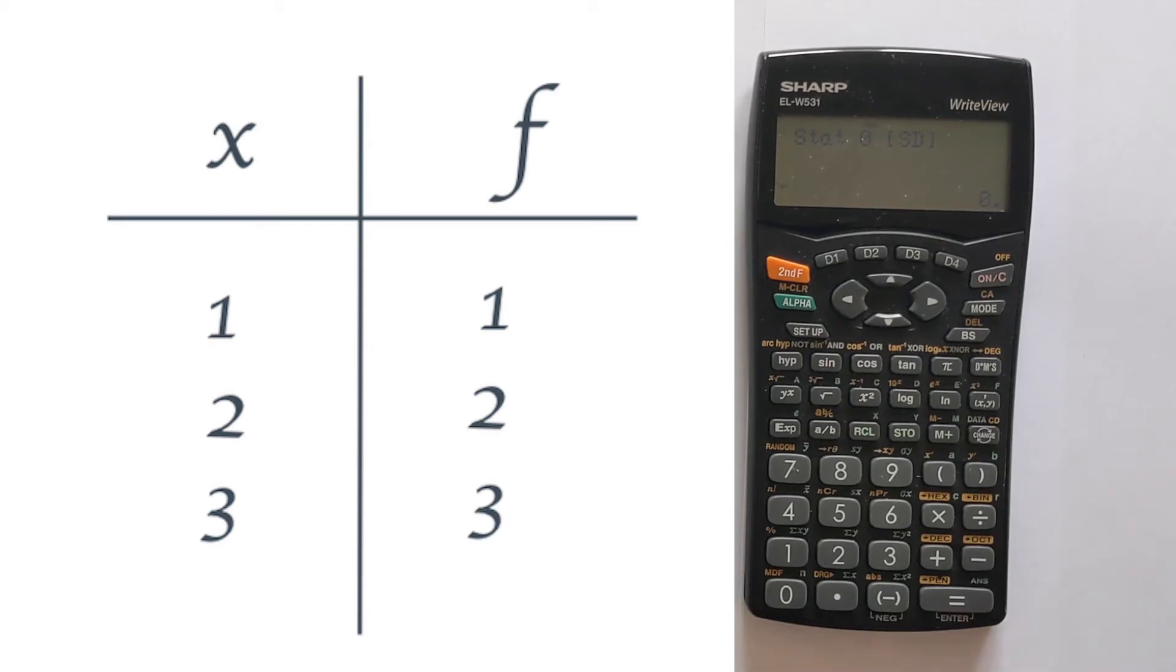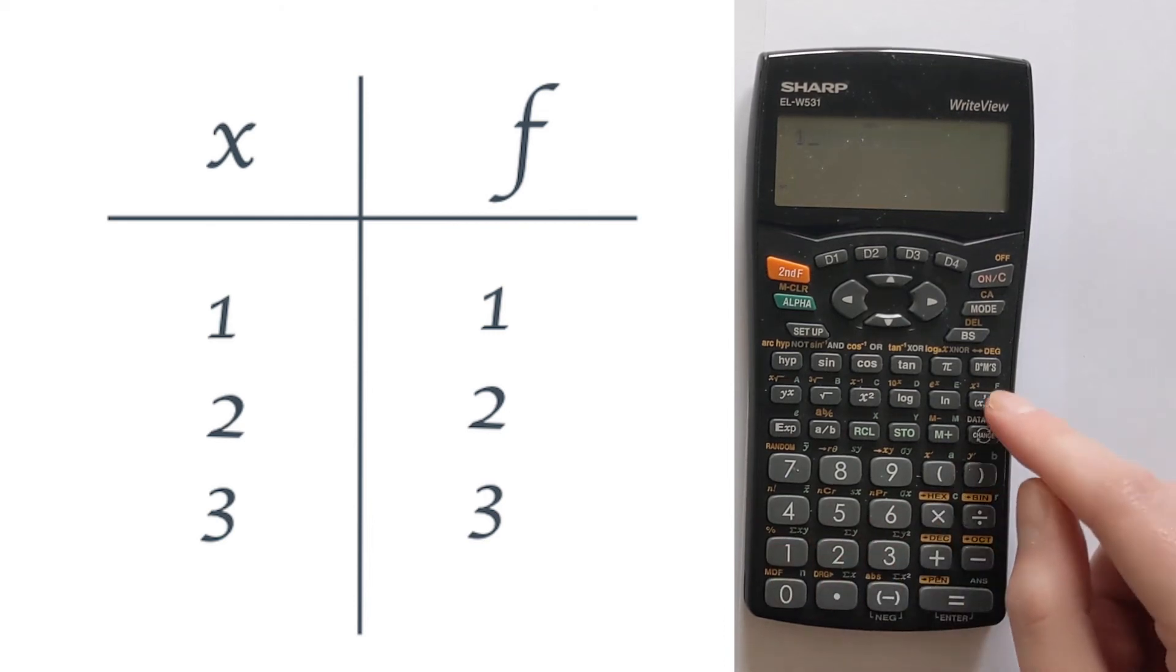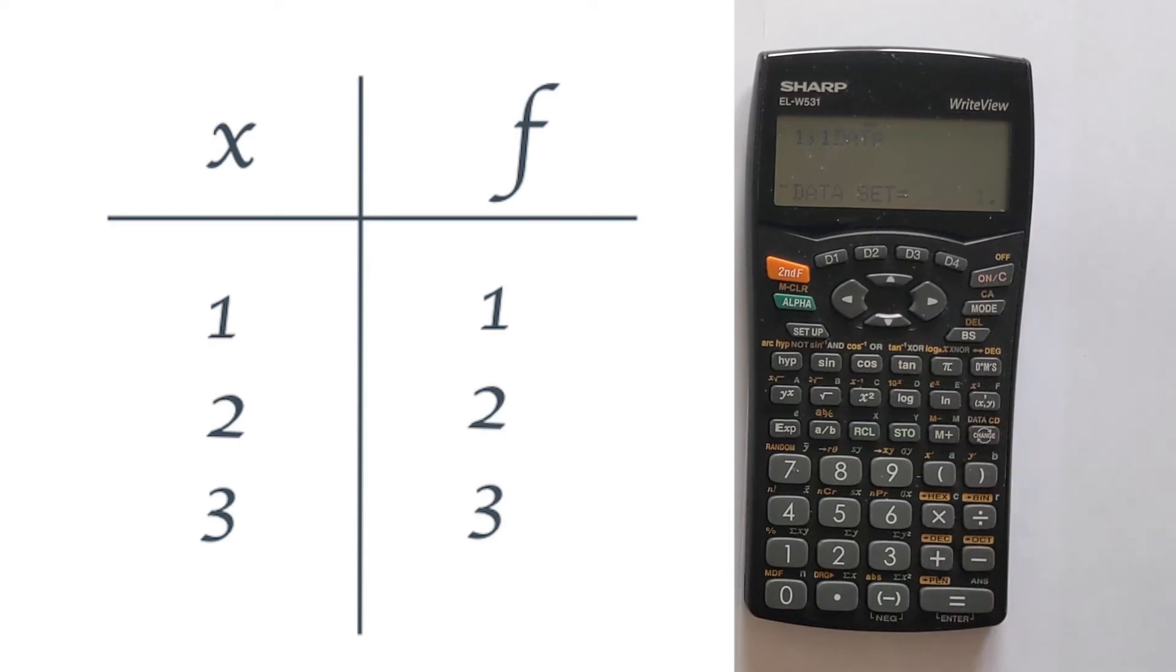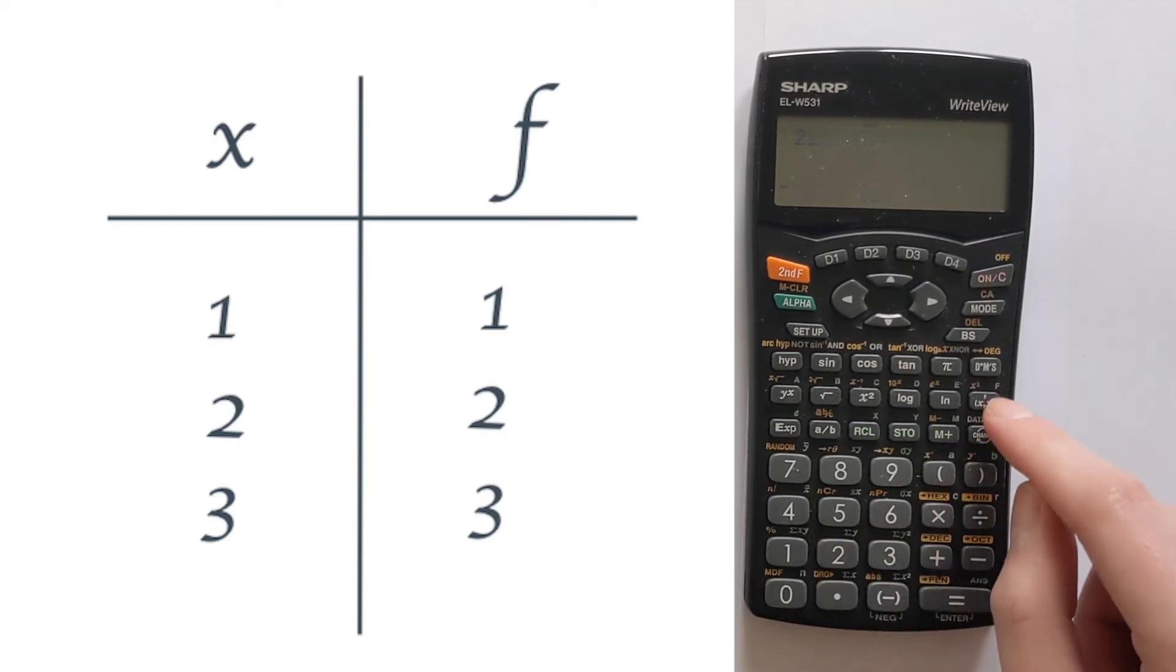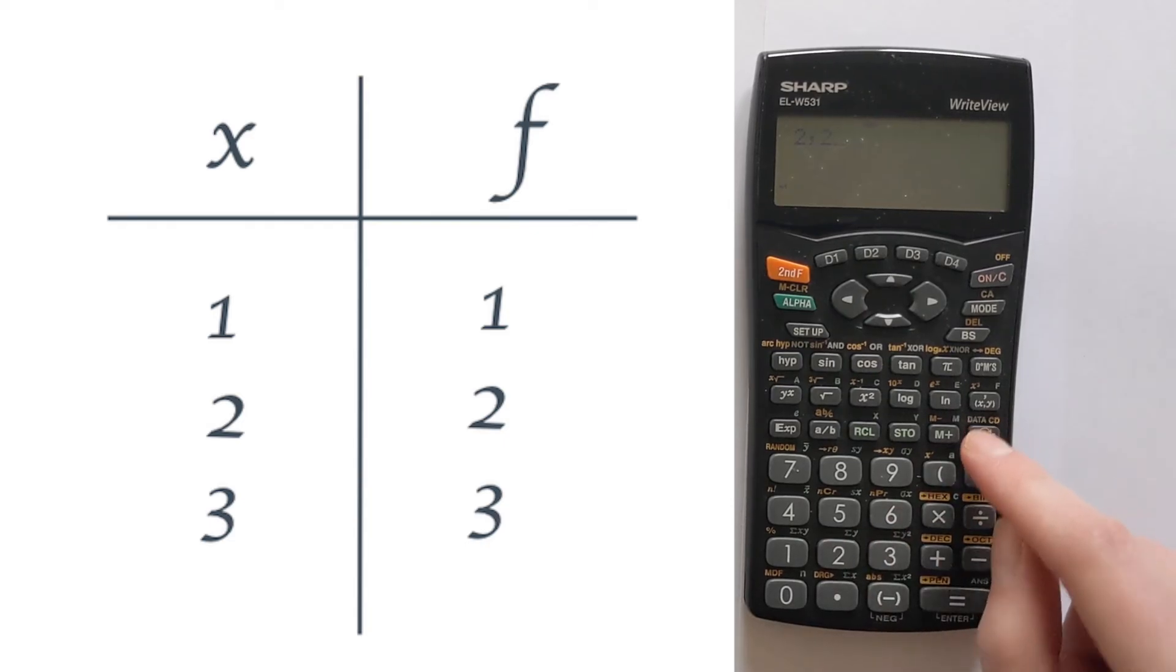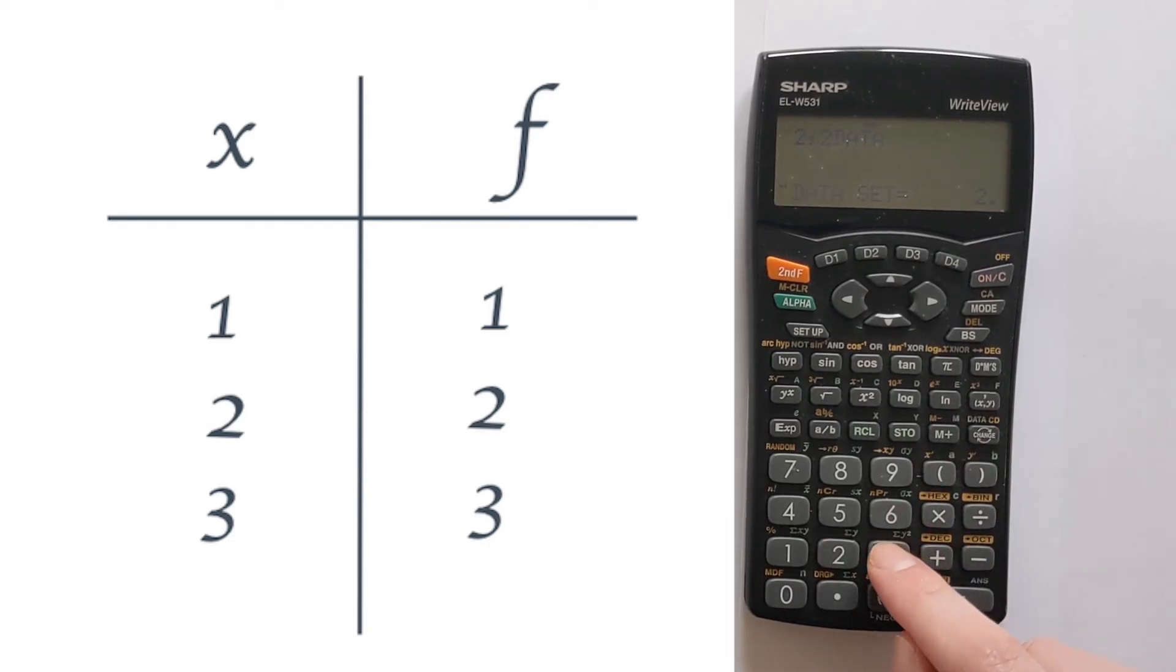To do this, you need to use the comma, and the comma will be found here. So simply you would do 1, 1 change, that stores 1, 1. Then we want 2, 2 change, that stores that. And then if we do 3, 3 change, that stores that.